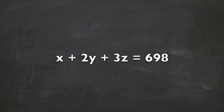We can then set up our equation as x plus 2y plus 3z equals 698.